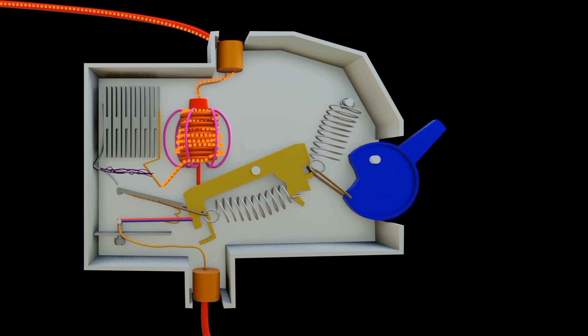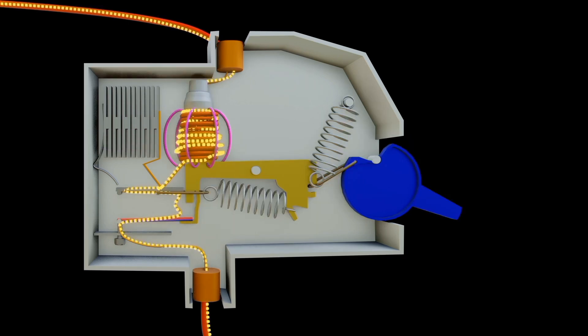Second function of circuit breaker is overload protection. This is achieved through the use of bimetallic strip.